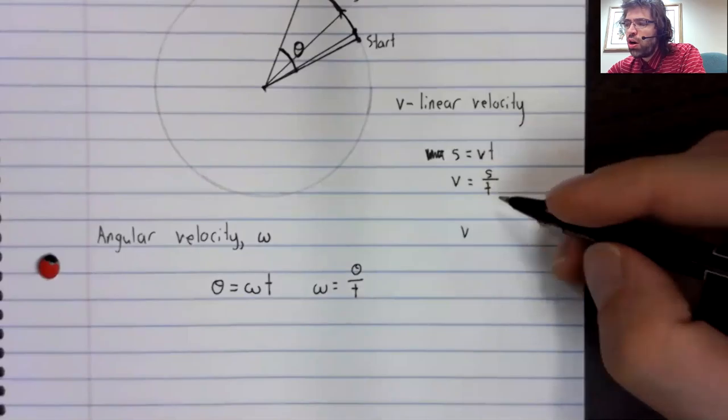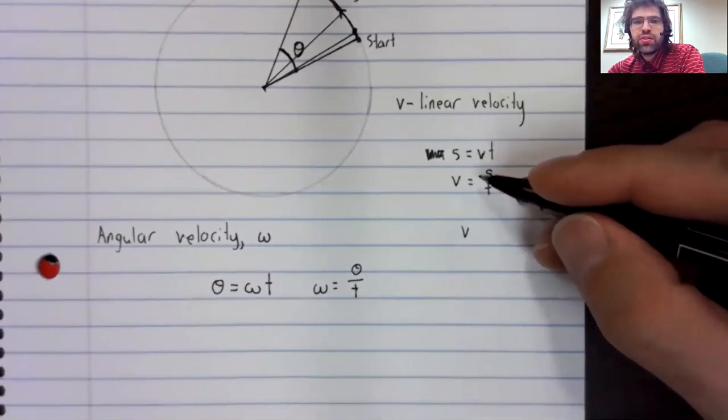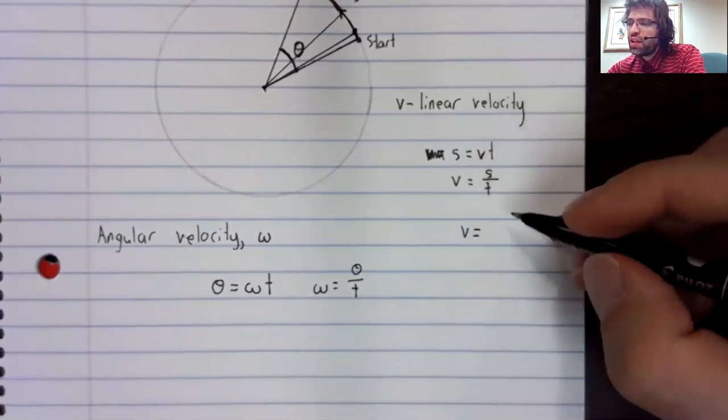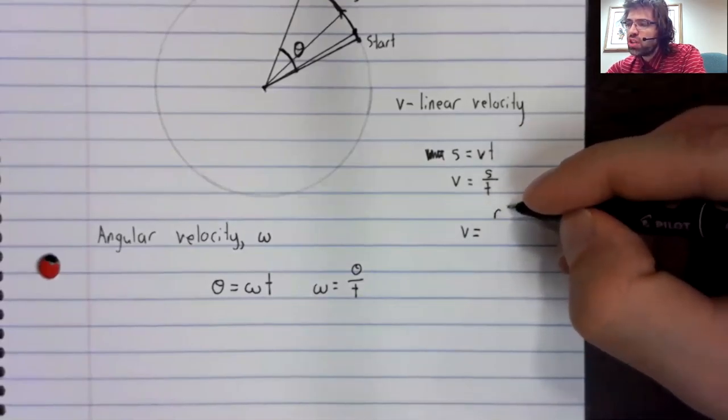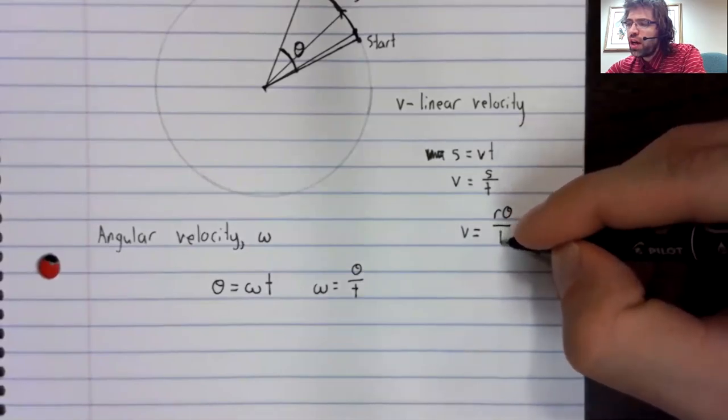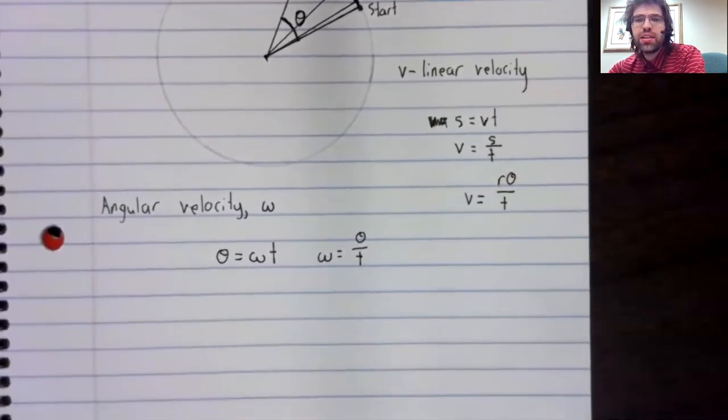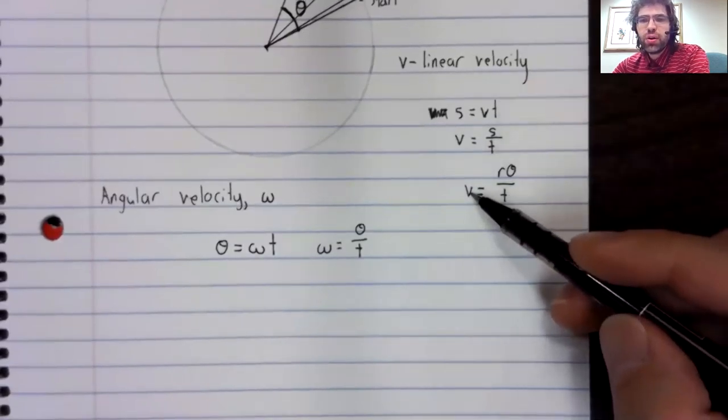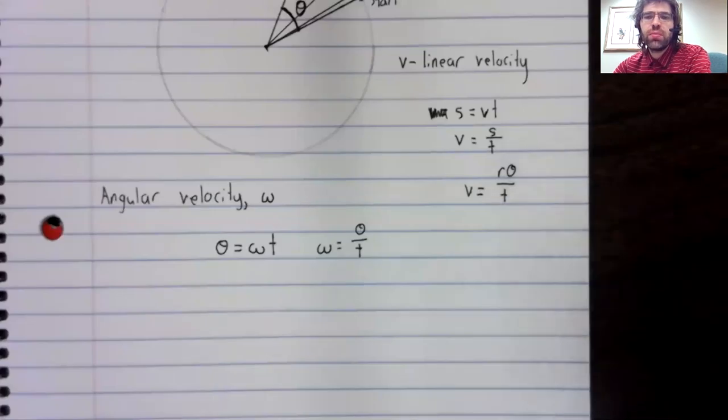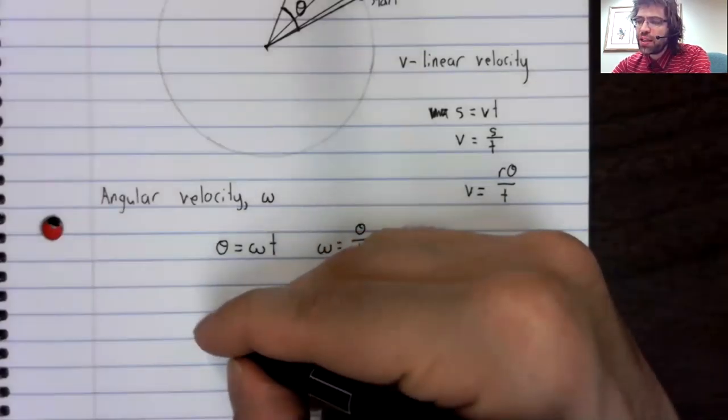We saw that we can rewrite this velocity formula as V equals R theta divided by T. The linear velocity is R theta divided by T.